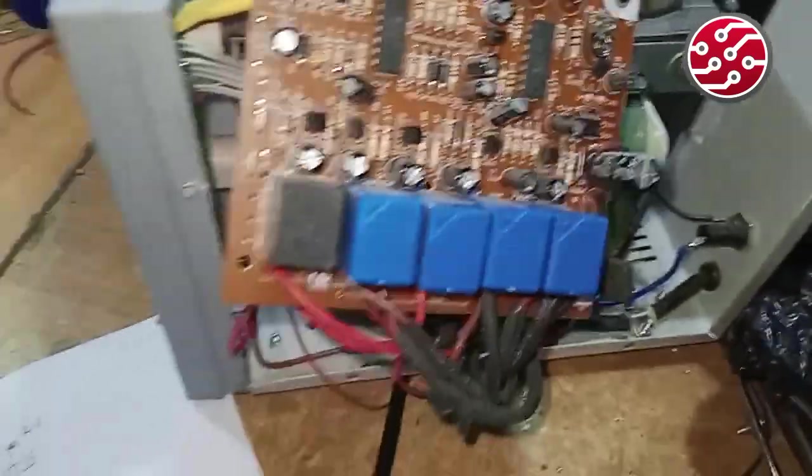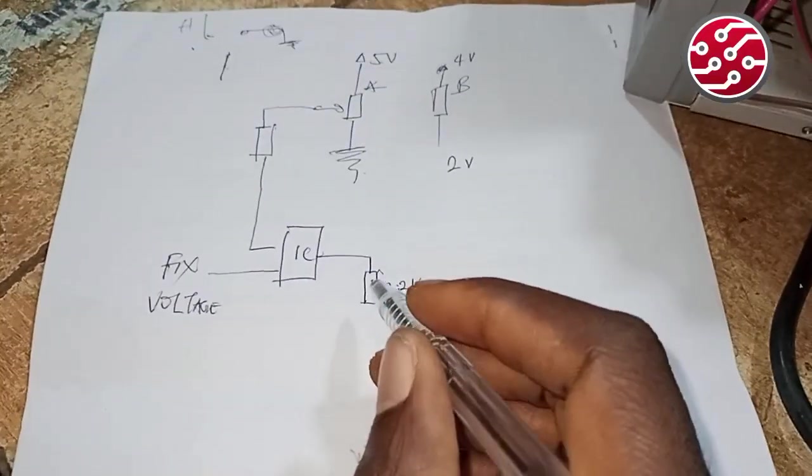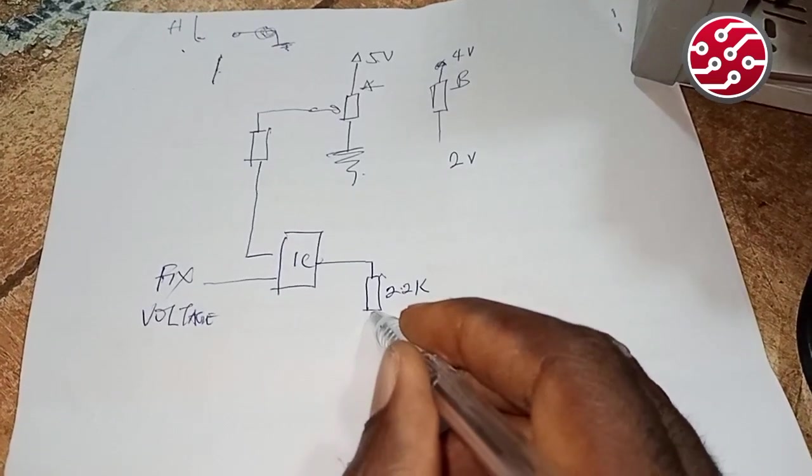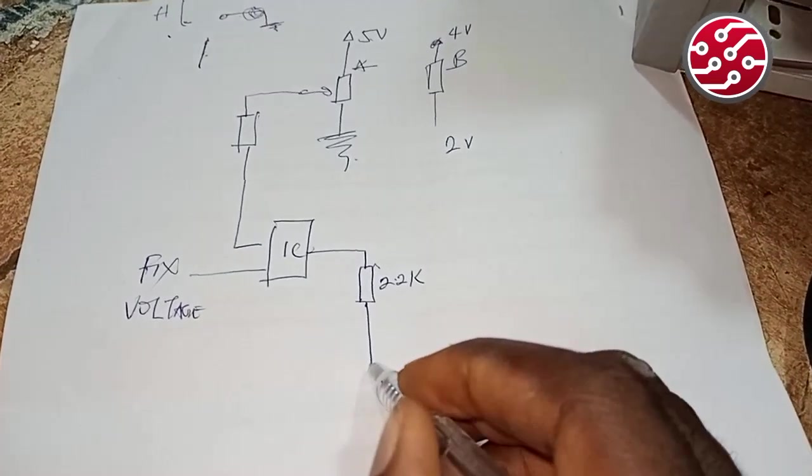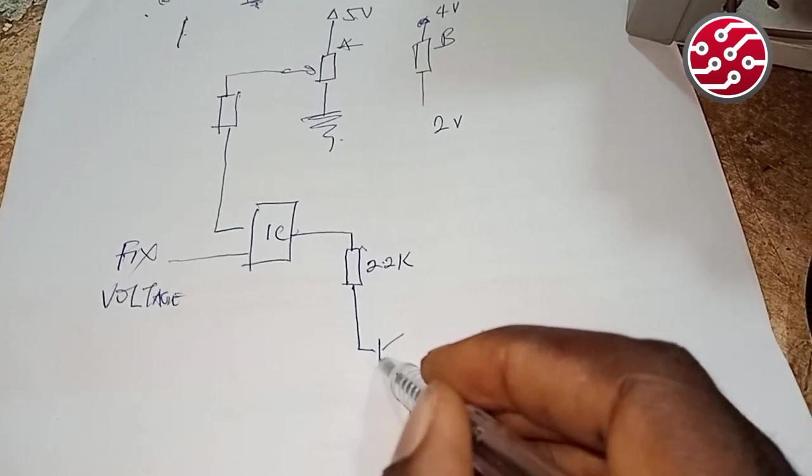Let me see the value there. Okay, they use 2.2k, which is almost the same thing as I was saying before. 2.2k now to the base of a transistor.